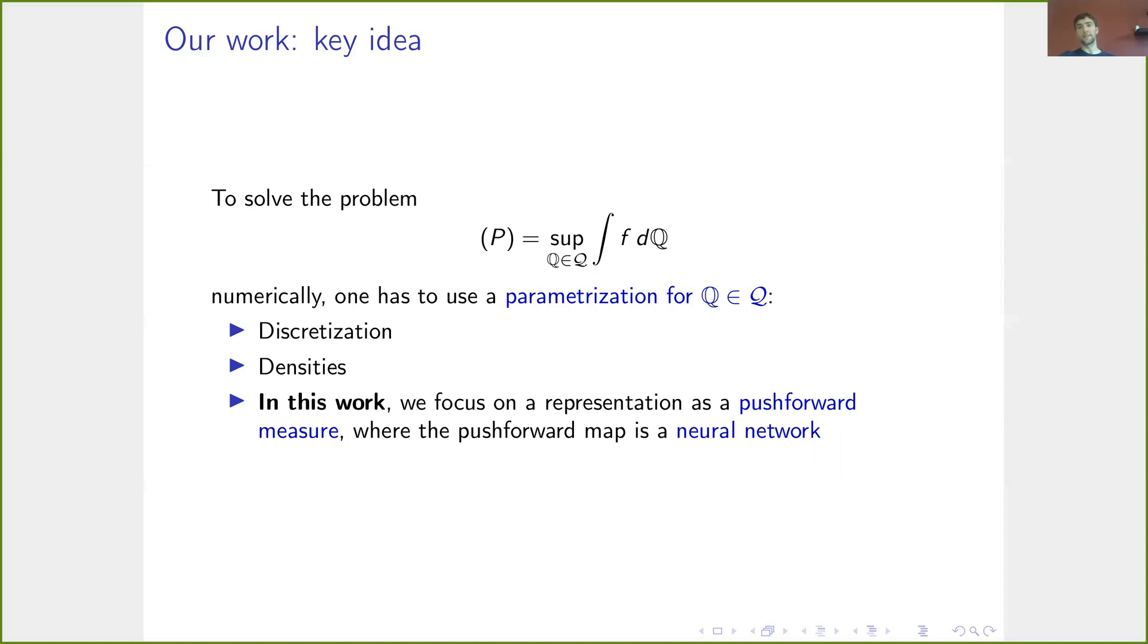But in this talk, I want to talk about using a representation as a push-forward measure, where the push-forward map is a neural network, which will then lead to this connection to generative adversarial networks.